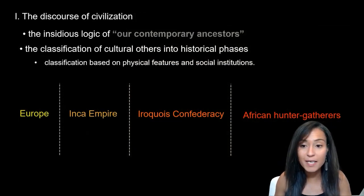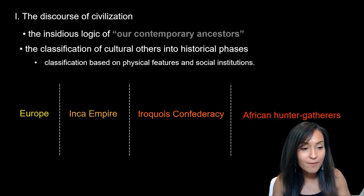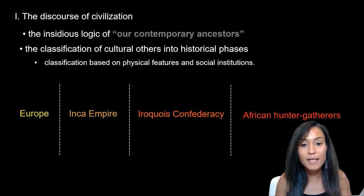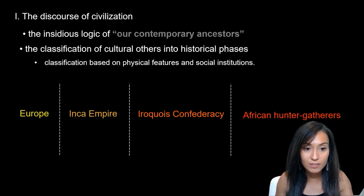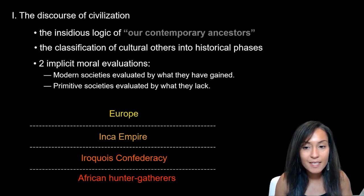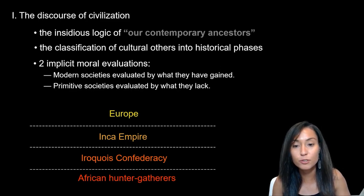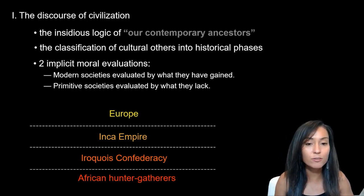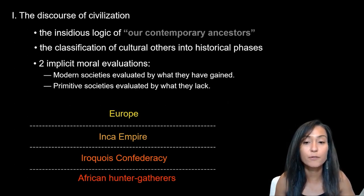As Europeans became aware of an increasing number of cultures, they began to classify them, dividing them into groups based on various physical features and social institutions. These criteria that early European explorers and colonizers were using reflect a culturally situated value judgment, often called ethnocentrism.